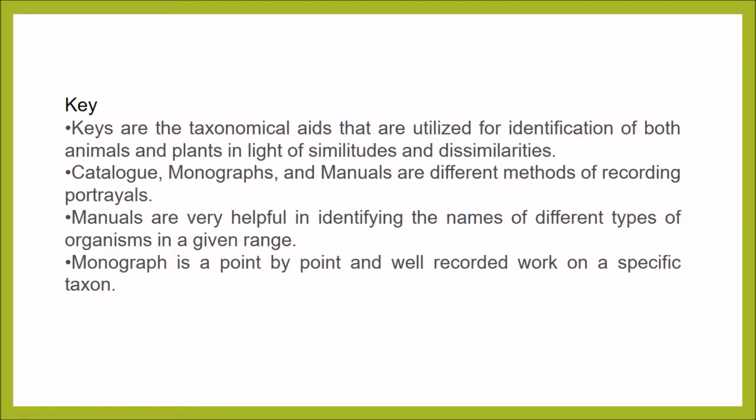Keys are taxonomical aids utilized for identification of both animals and plants based on similarities and dissimilarities. Catalog, monographs, and manuals are different methods of recording descriptions. Manuals are very useful in identifying the names of different types of organisms in a given range. A monograph is a detailed and well-documented work on a specific taxon.